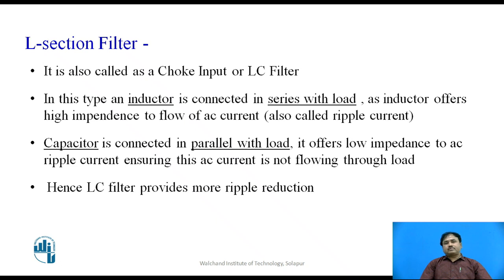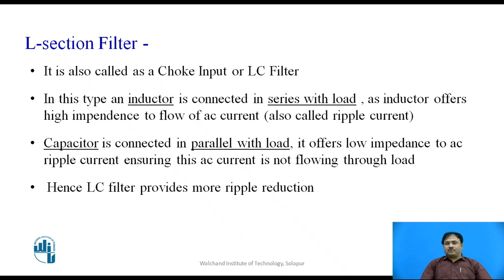Now we are going to combine the features of the L filter and the C filter, hoping that the ripple value will be independent of the load value. In this circuit, the inductor is connected in series with the load — as we know, the inductor offers very high impedance to the flow of AC current. The capacitance is connected across the load in parallel, because the capacitor provides a very low reactance path to AC current. When we combine the features of inductor and capacitor we get better ripple reduction.